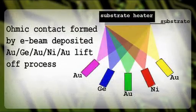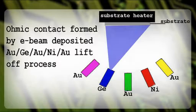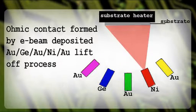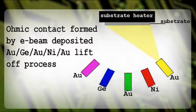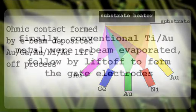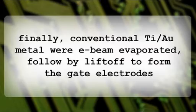Ohmic contacts are formed by e-beam deposited gold/germanium/gold/nickel/gold using a liftoff process. Finally, conventional titanium/gold metal is e-beam evaporated, followed by liftoff to form the gate electrodes.